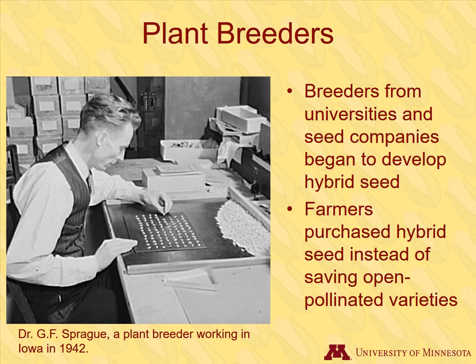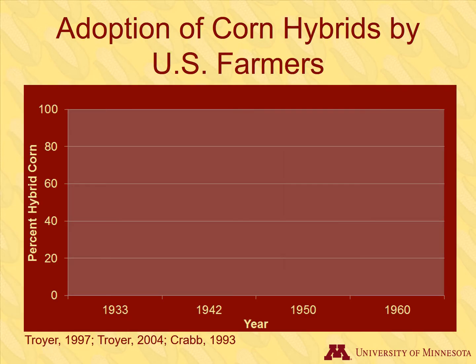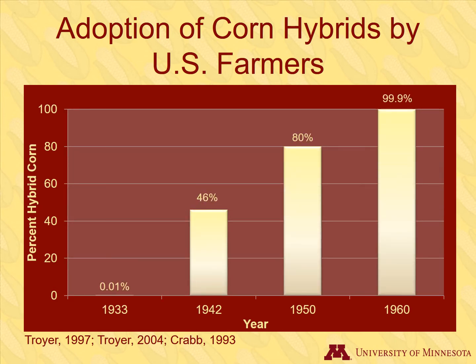Once scientists had resolved the production issues around producing hybrids on a larger scale, breeders from universities and seed companies began to develop many hybrids. Instead of farmers saving seed from their open pollinated crops, they purchased hybrid seed every year from public universities and private seed companies. Today, nearly all of the hybrid seed corn is produced by private breeding companies. Hybrids were initially resisted by some people, just like many new technologies are today, and were considered unnatural in comparison to open pollinated varieties.